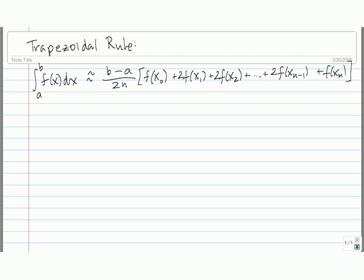Let's see where the formula for the trapezoidal rule actually comes from. We're going to derive this formula for the specific case n equals 4, just so you can get an idea of where it comes from.